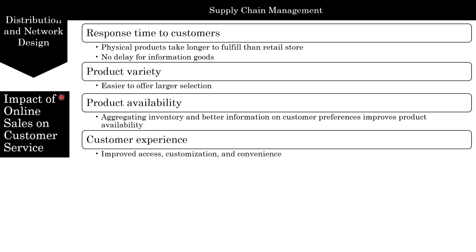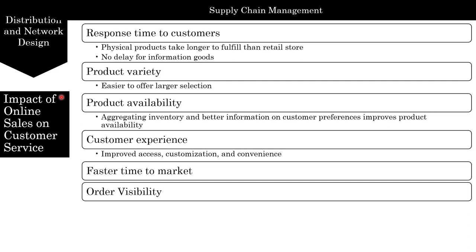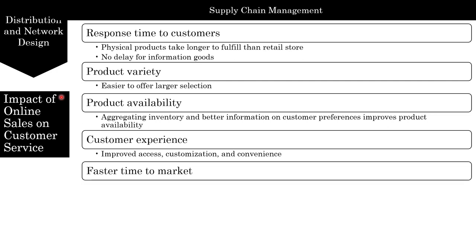Unlike most retail stores that are open only during business hours, the internet allows a customer to place an order at any convenient time — you can place an order on Amazon.com at 2 o'clock in the morning. Regarding faster time to market, a firm can introduce a new product much more quickly online as compared to physical channels.